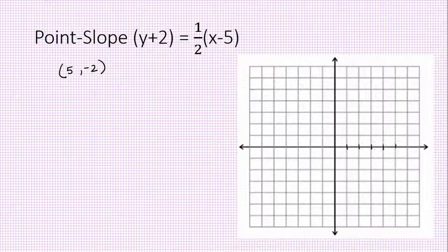If the scale is 1, then this is 5, and negative 2 is going to be right there. So you have a point here, and the slope is 1 half.